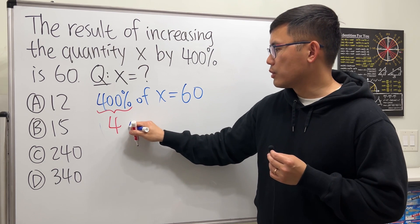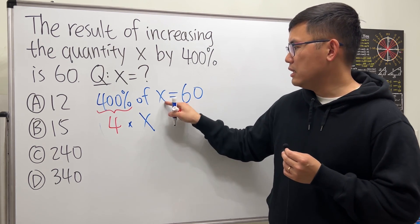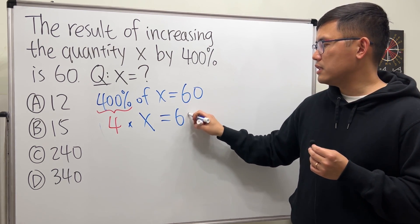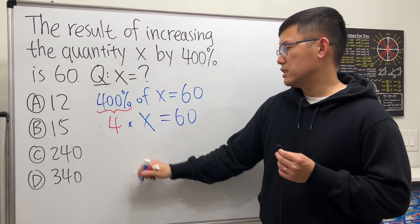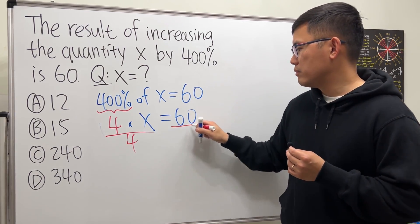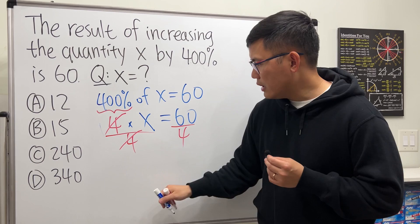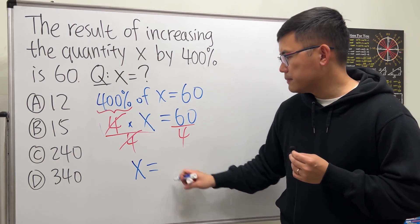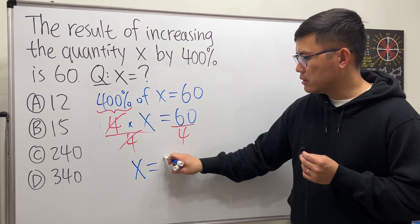They multiply by x and make that equal to 60. To solve for x, they just divide both sides by 4, and get x equals 60 divided by 4, that's 15.